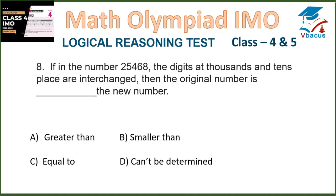Question 8. In the number 25468, the digits at the 1000s and 10s place are interchanged. Is the original number greater than, less than, or equal to the new number? In 25468, the digit at the 1000s place is 5 and at the 10s place is 6. If we interchange, 6 will come at the 1000s place and 5 will go to the 10s place. So the original number is less than the new number, which is option B.